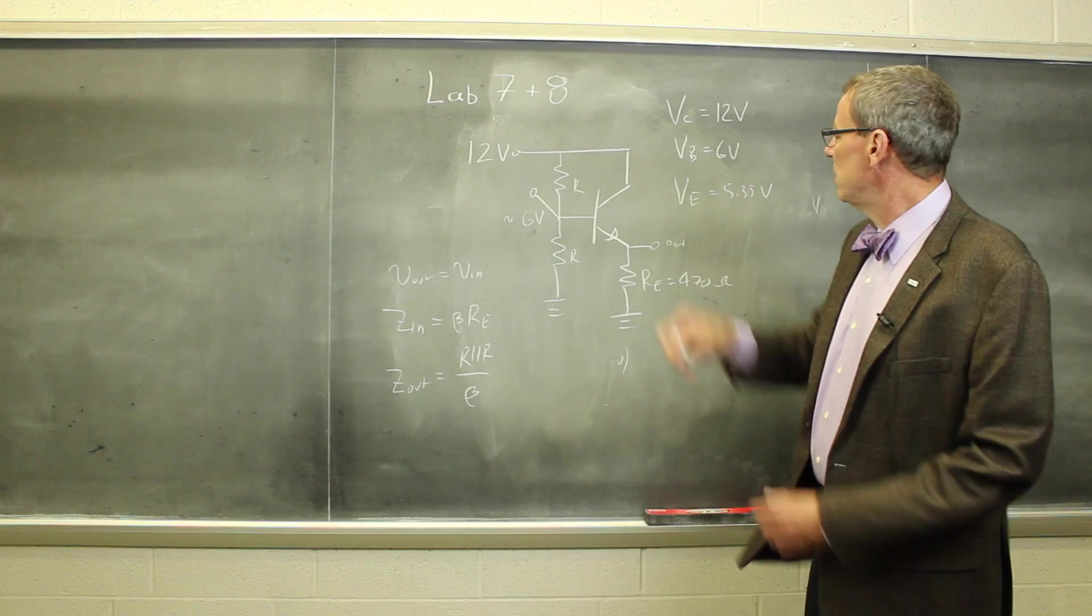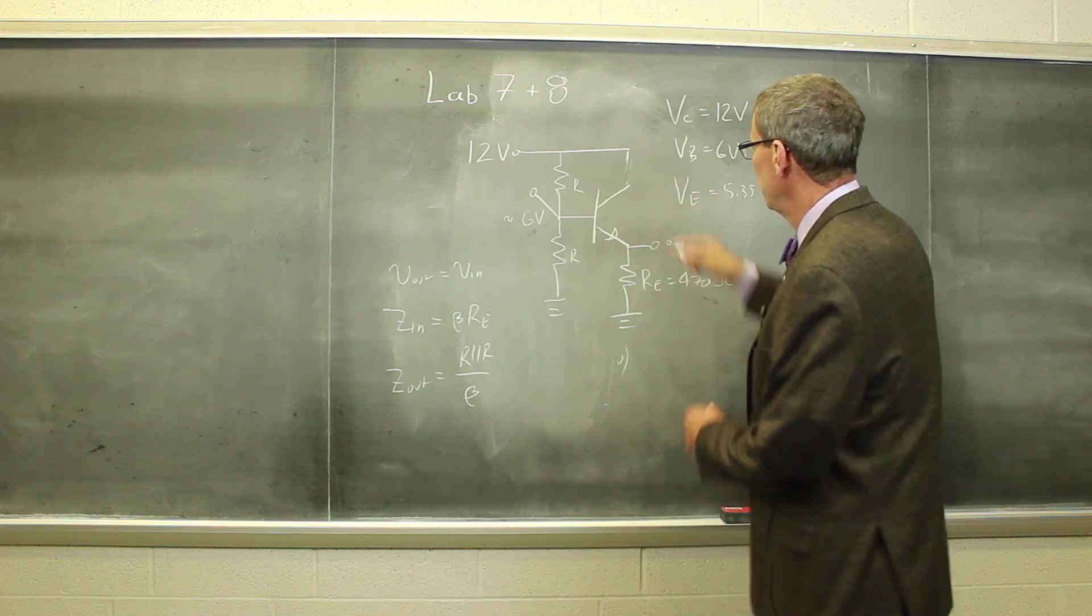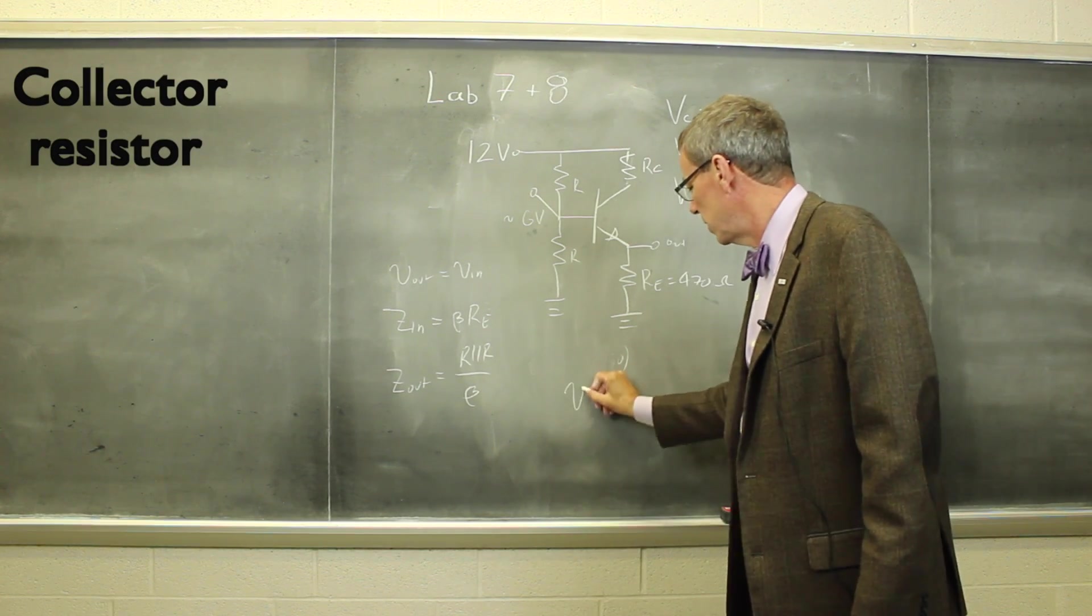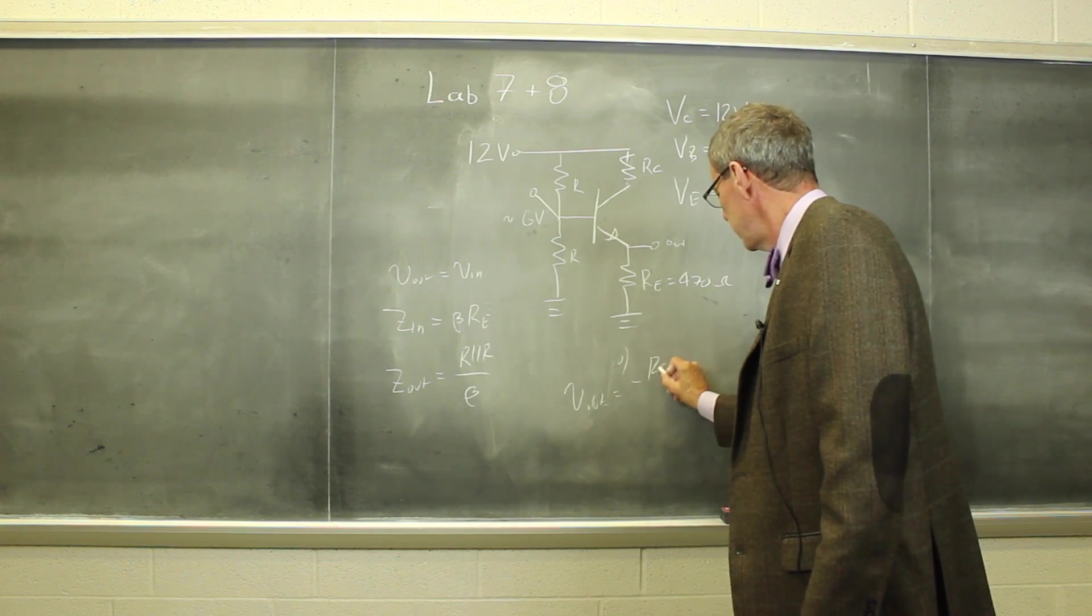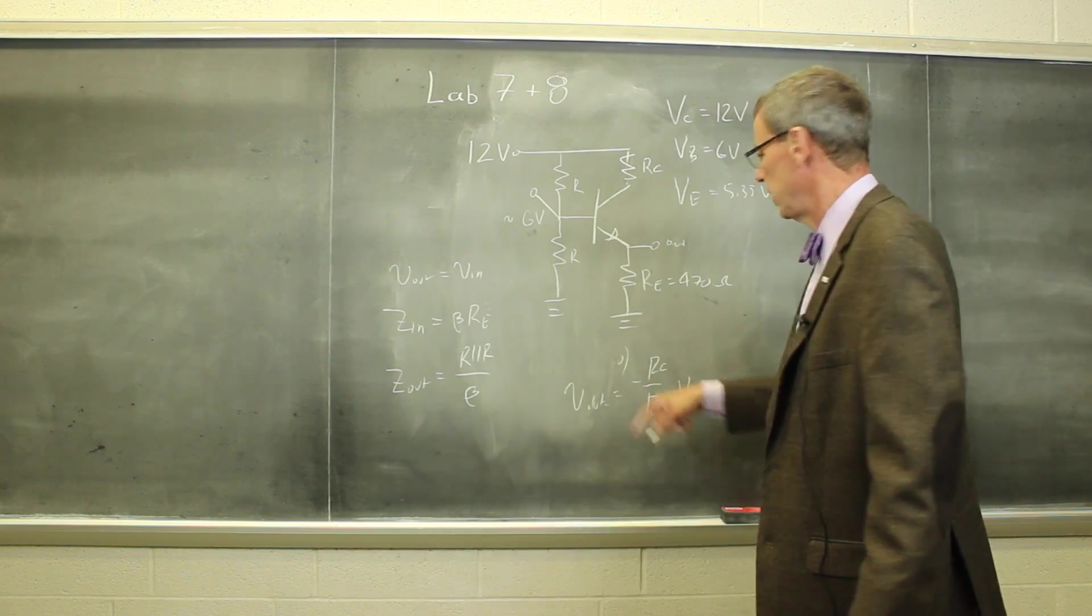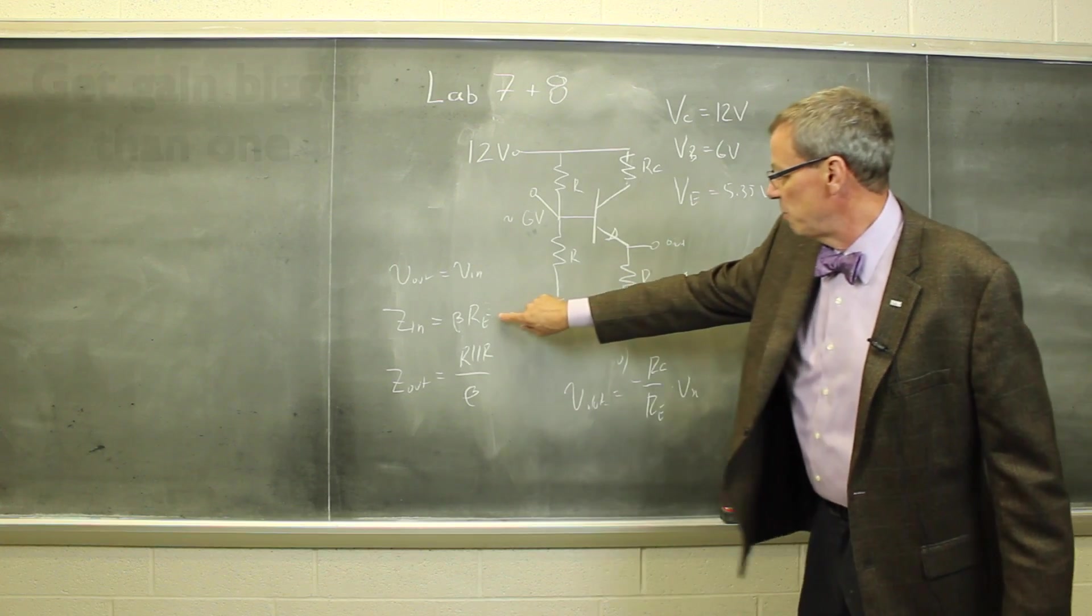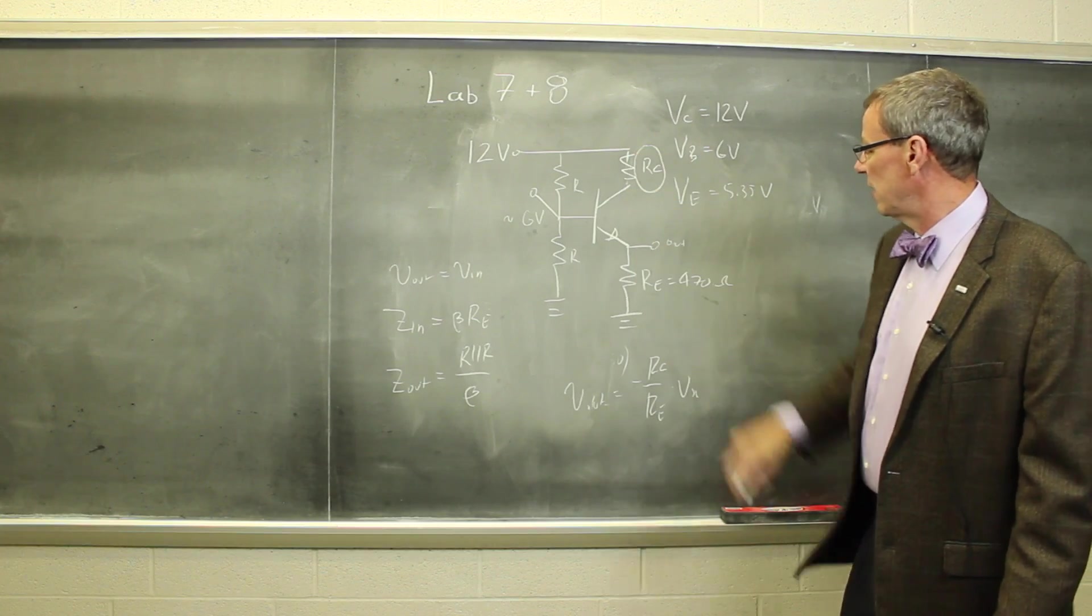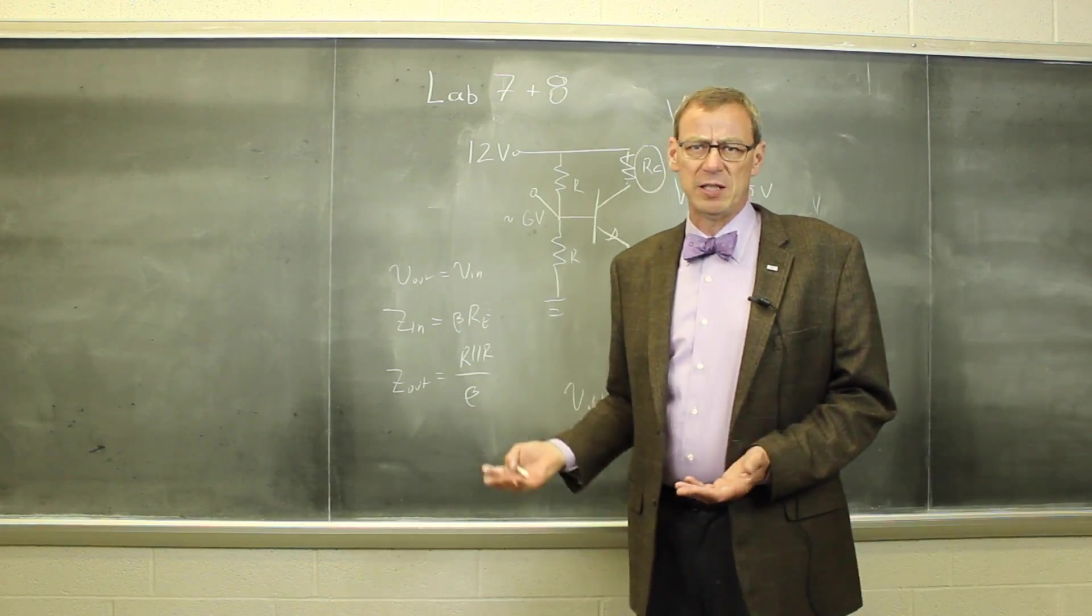When we go on to lab 8, we're going to change this circuit slightly. We're going to add a second resistor here, a collector resistor. And now the output is going to be minus the ratio of RC to RE times the input. So we're going to get some gain here. And the same input impedance will still hold. We'll see the output impedance in this case is actually given by this collector resistance here. So now let's go down to the lab and have a look at these circuits.